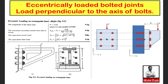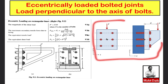In the last video we discussed the design of eccentrically loaded bolted joints for the case where the load lies in the plane containing the bolt. In this video we will discuss two cases of eccentrically loaded bolted joints: one where the load acts perpendicular to the axis of the bolt, and one where the load acts parallel to the axis of the bolt. We will solve two problems for both cases.